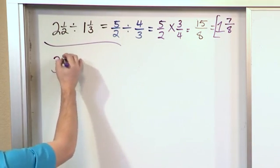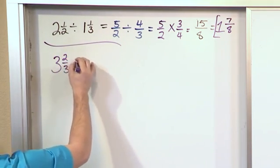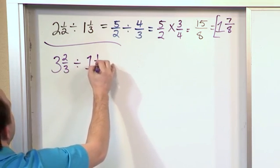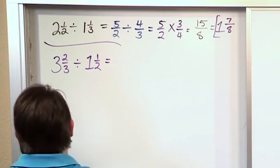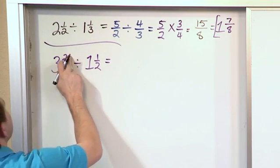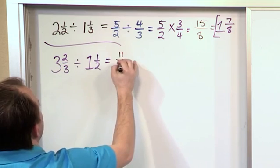What if you had 3 and 2 thirds divided by 1 and 1 half, like that? Well, the same sort of thing would happen. We take the mixed numbers. 3 times 3 is 9, plus 2 is 11, and we write it over 3.